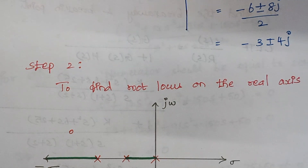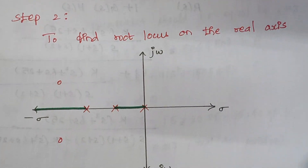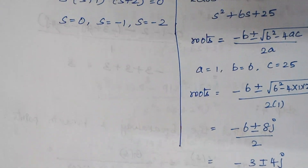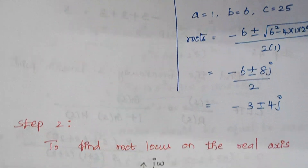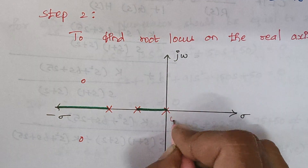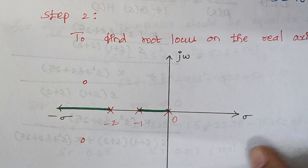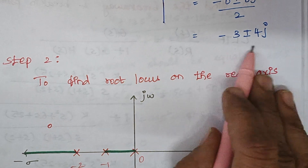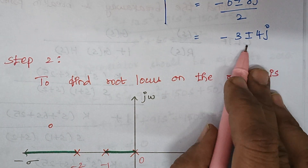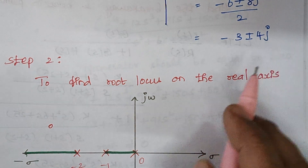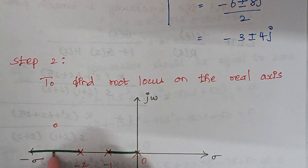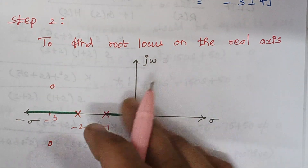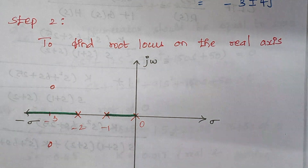Step 2 is to find the root locus on the real axis. We draw the x-axis and y-axis and mark the pole values: 0, minus 1, and minus 2. The zeros are minus 3 plus or minus 4j — so minus 3 plus 4j is marked above the real axis and minus 3 minus 4j is marked below. This completes step 2.